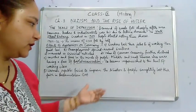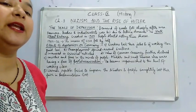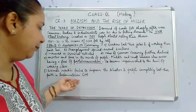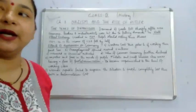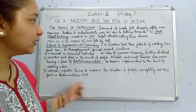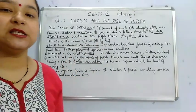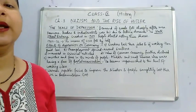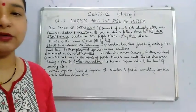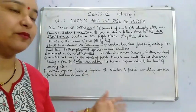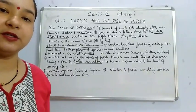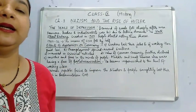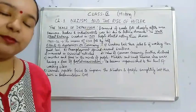The Weimar Republic — the parliamentary government in Germany — completely failed to improve the situation, and people entirely lost their faith in parliamentary government. Germany seriously needed such a government and such a ruler who could improve the situation and take the country out of this devastating crisis. This was the background that was being prepared for the rise of Hitler, which will be discussed in the upcoming videos.